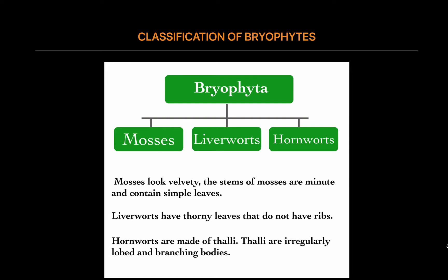The gametophytes of mosses have typical leaf-like structures. They have cells that are capable of absorbing water. However, specialized vascular plant roots are absent. Mosses are only one cell thick except at the midrib.